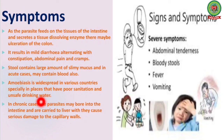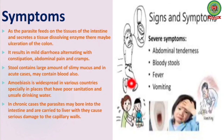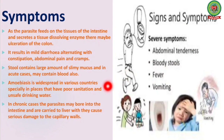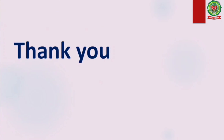Amoebiasis is widespread, especially in places with poor sanitary conditions and unsafe drinking water. In chronic cases, the parasites may bore into the intestine wall and are carried to the liver, where they cause serious damage to the capillary walls. Signs and symptoms include abdominal tenderness, bloody stools, fever, and vomiting. The basic treatment is a combination of antibiotic and amoebicidal medication, and certain drugs like metronidazole can be given for treatment of amoebic dysentery.